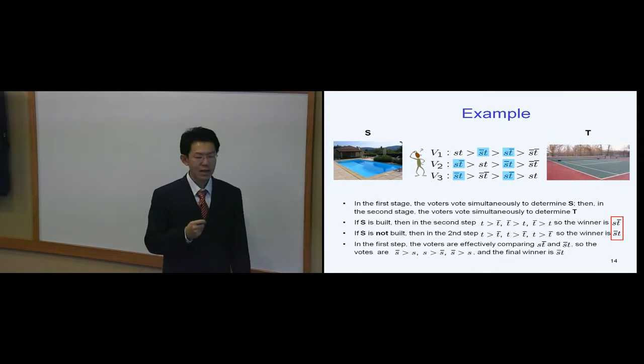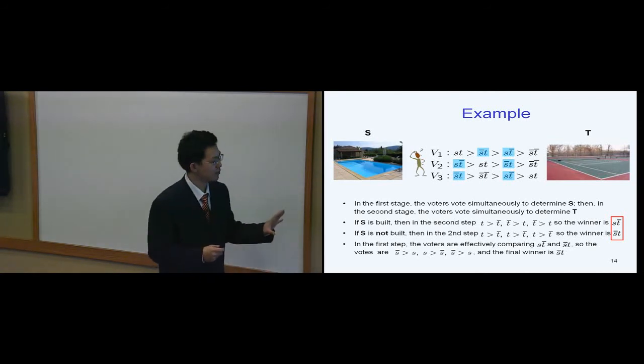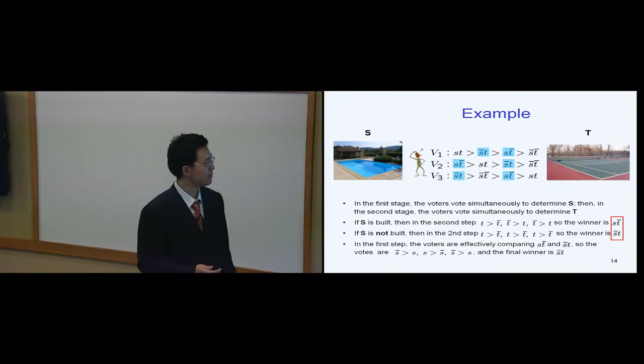We already know that if the swimming pool is not built, then the tennis court should be built. So this is the outcome of this strategic sequential process: not building a swimming pool and building a tennis court.